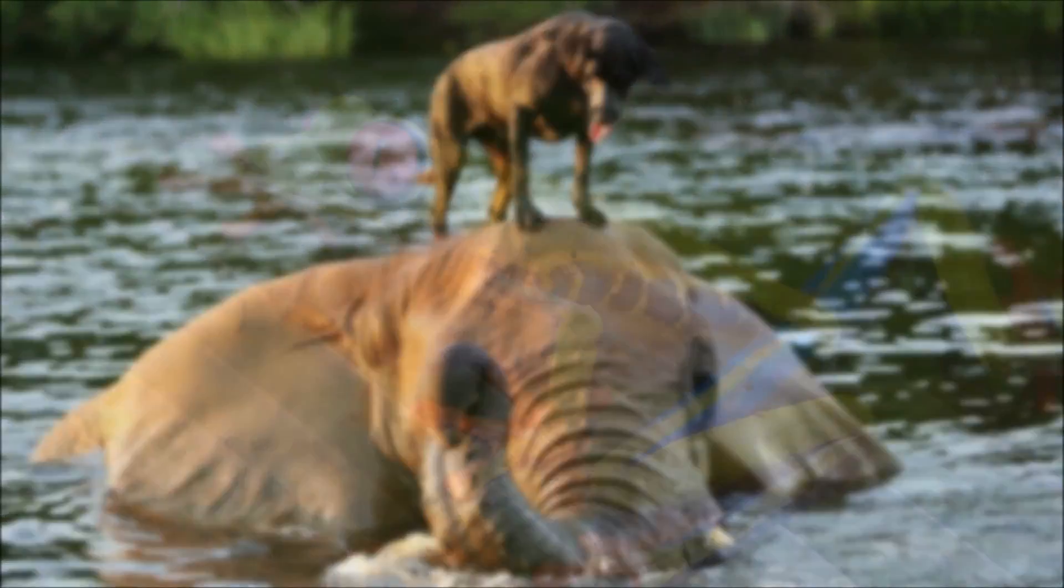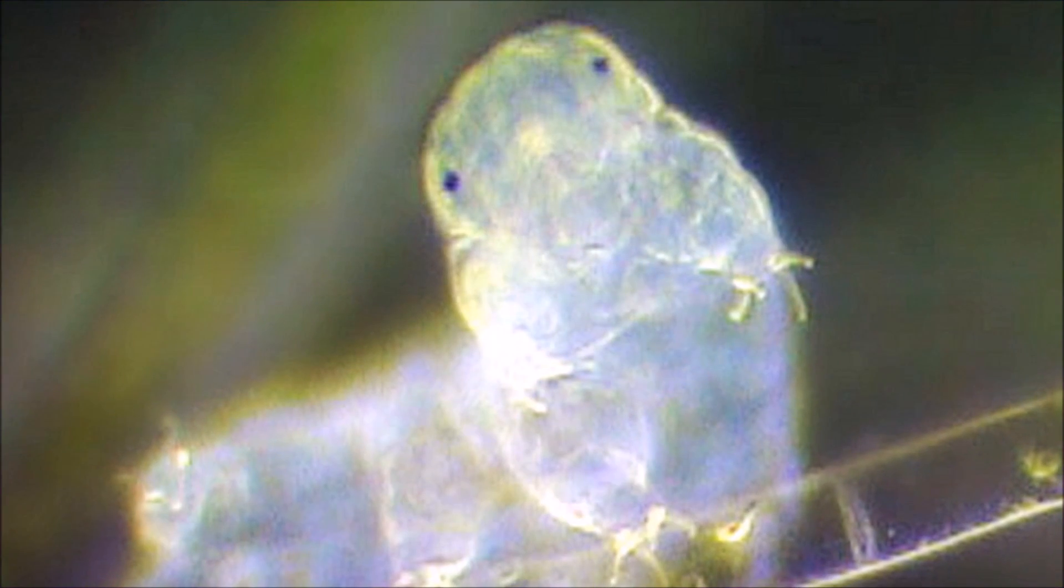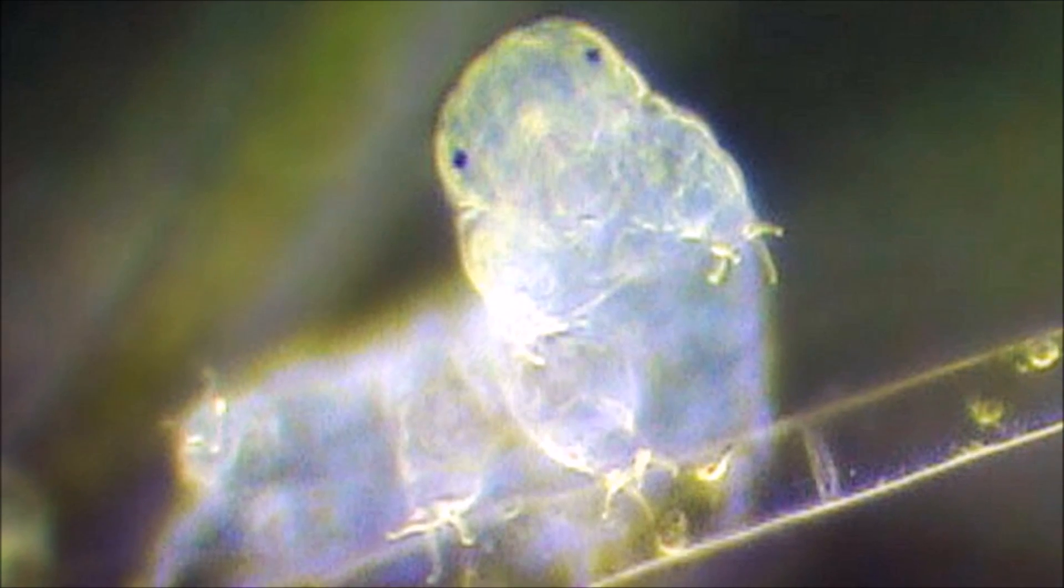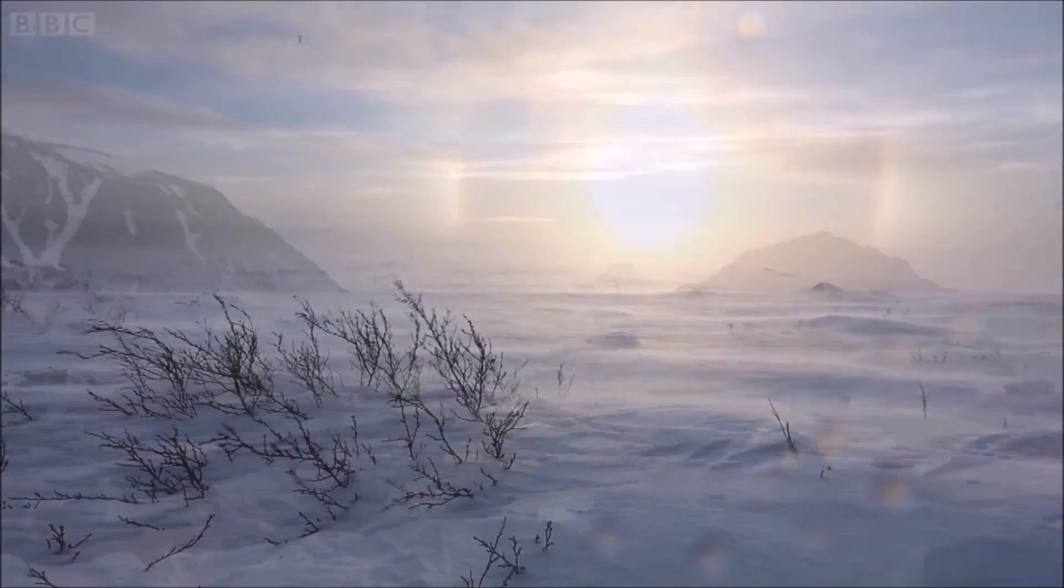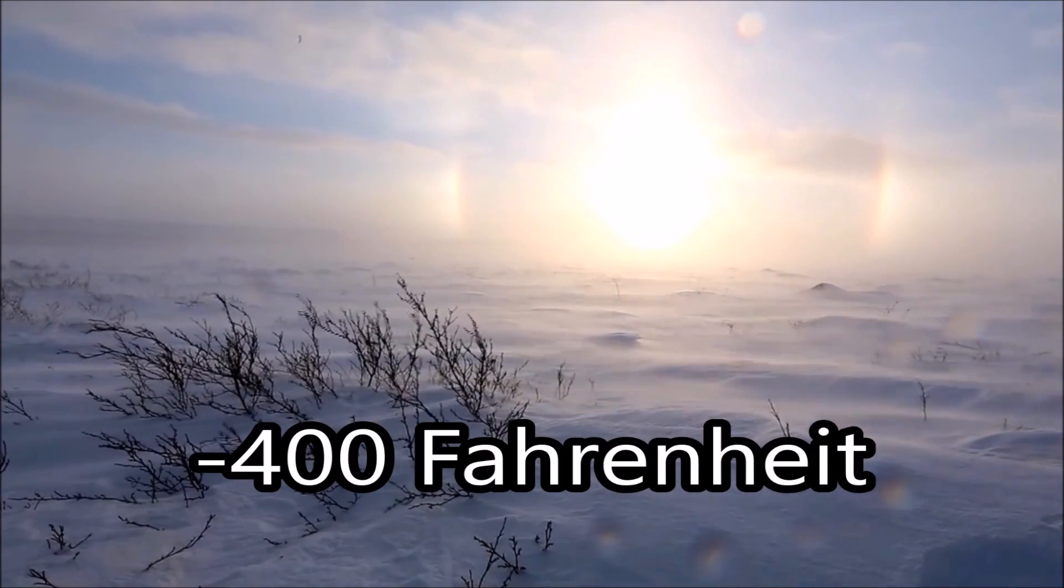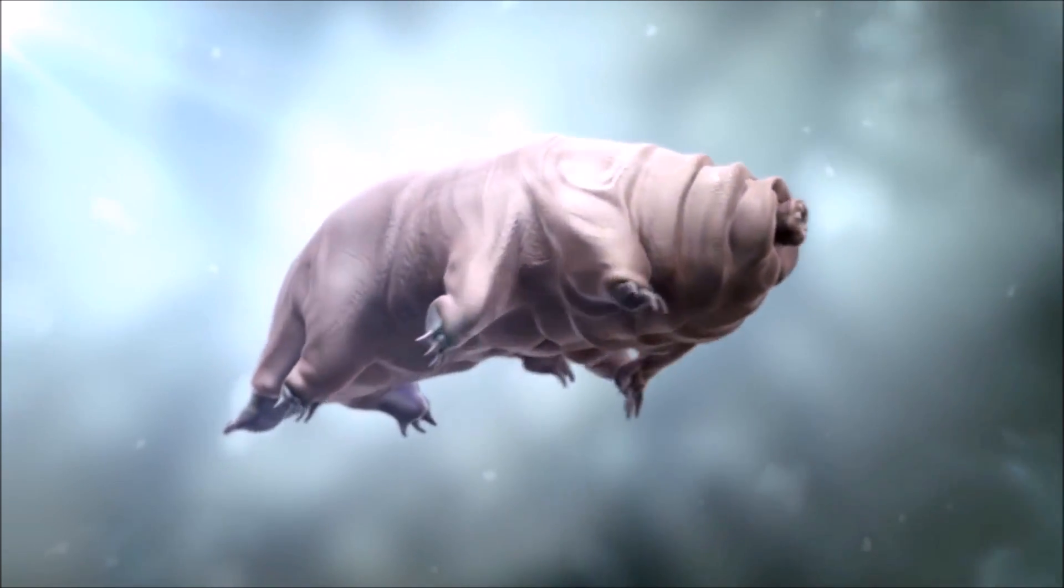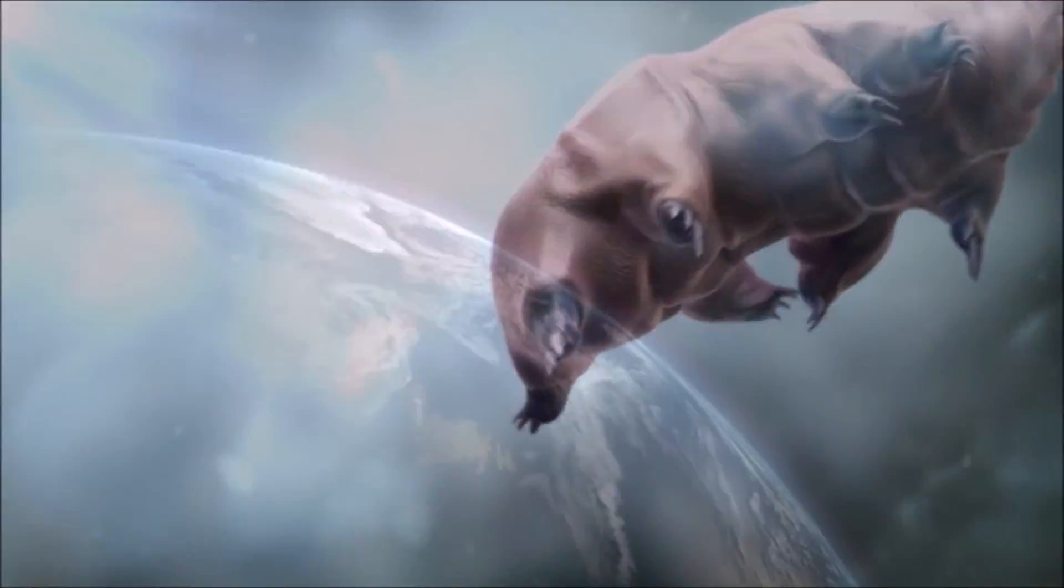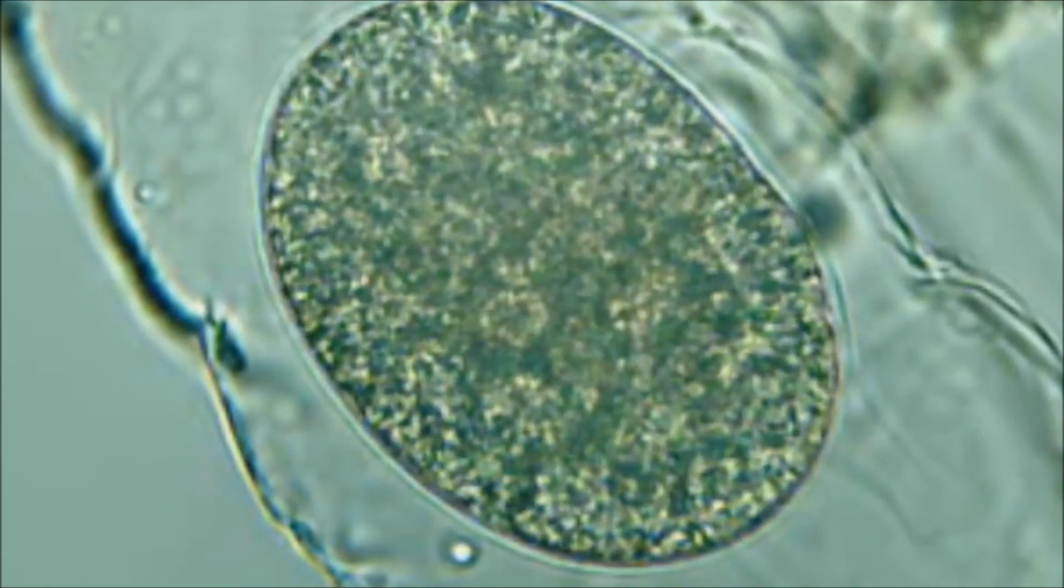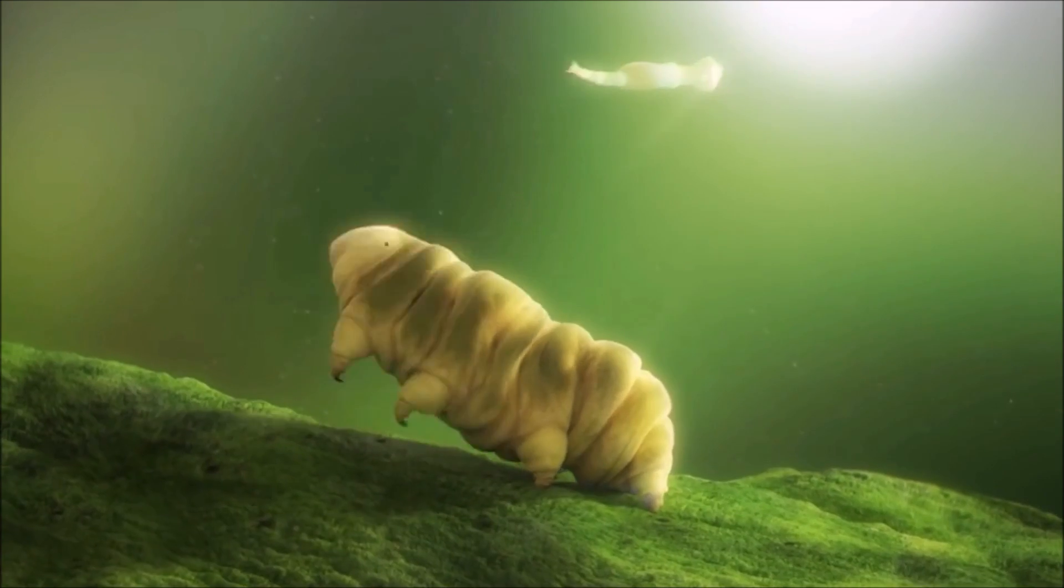And most importantly, it can adapt to almost any environment through the process of evolution. For example, meet the tardigrade. These little guys might not look like much, but they can survive almost anywhere. Antarctica, no problem. They can withstand temperatures as low as negative 400 degrees Fahrenheit. Put them five miles under the ocean? No problem. They can withstand pressure six times greater than the deepest ocean floors. Put them in outer space. They'll curl up into a dry, lifeless ball for up to 30 years and still reanimate upon exposure to water and air.